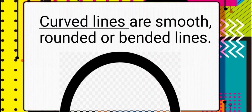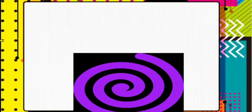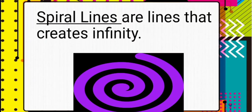Our last kind of line is the spiral line. Spiral lines are lines that create a sense of infinity. Below is our example of spiral lines.